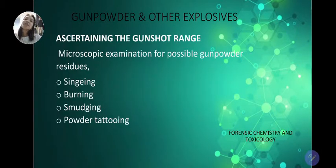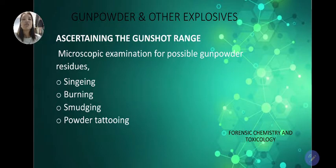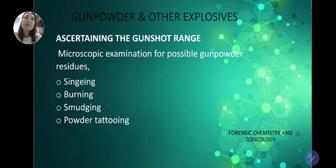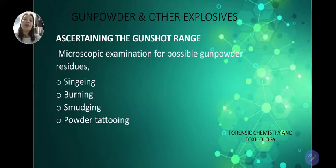In ascertaining gunshot range, we conduct microscopic examination for possible gunpowder residues. We look at singeing — the burning of the edges of the gunshot wound — and then there is burning, smudging, and powder tattooing. These are the factors we consider to ascertain the range of the gunshot.